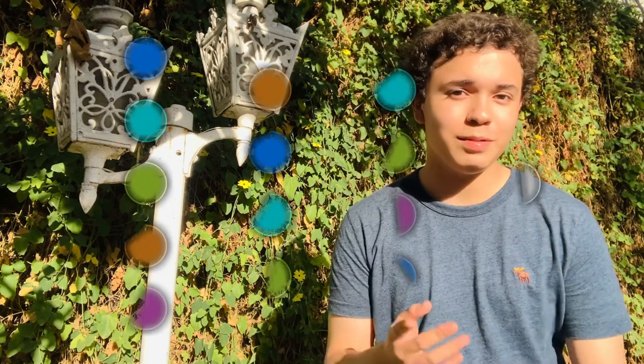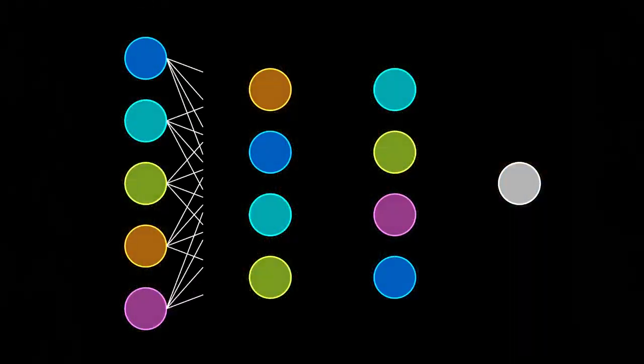How could you ever get a computer to recognize an image the way a human does? That sounds insane. Well, turns out we can do it with neural networks, which are typically represented like this.